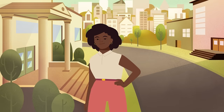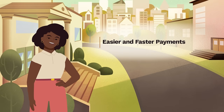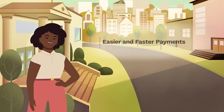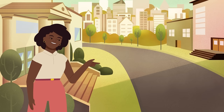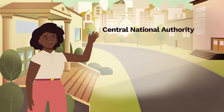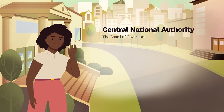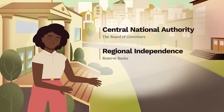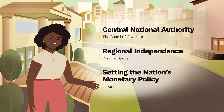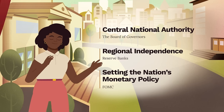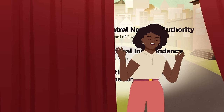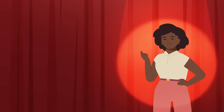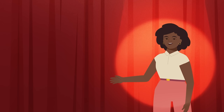Another goal of the Fed was to make it easier and faster to make payments, especially between different parts of the country. To achieve these goals, the Fed then and now combined central national authority through the Board of Governors — remember that on the map? — with a healthy dose of regional independence through the Reserve Banks. A third entity, the Federal Open Market Committee, brings together the expertise of the first two in setting the nation's monetary policy. Let's take a walk through some of the places that make up the Fed, where you can see firsthand what we do.